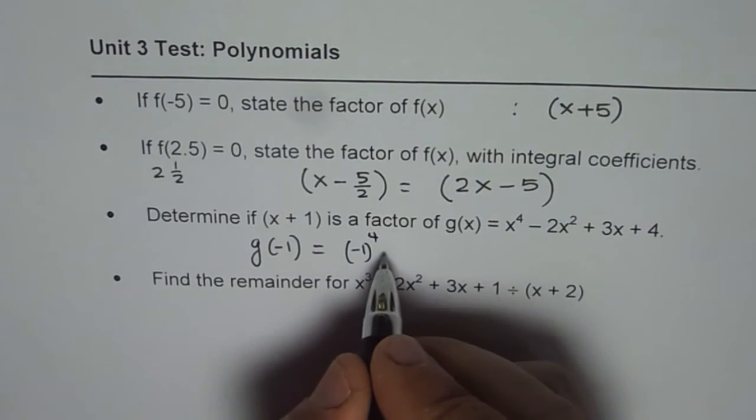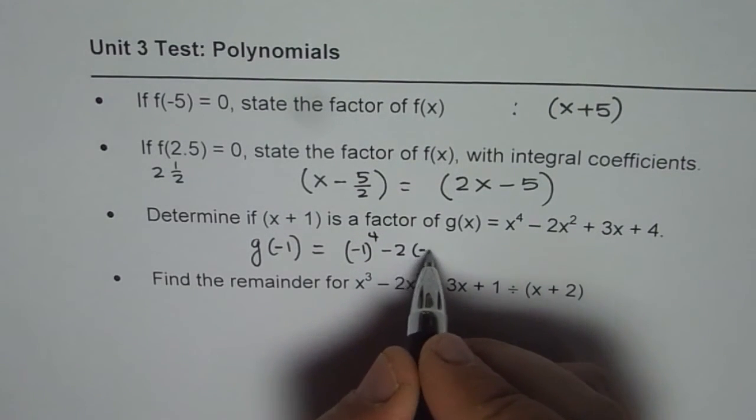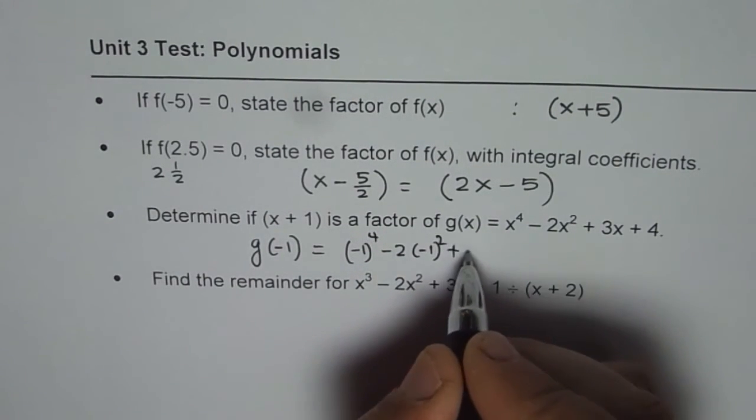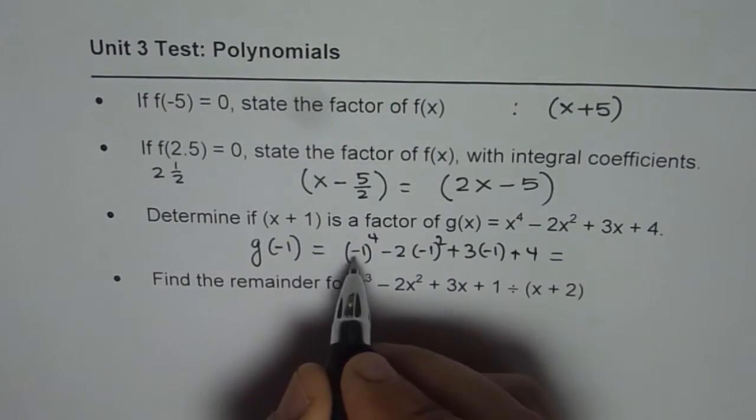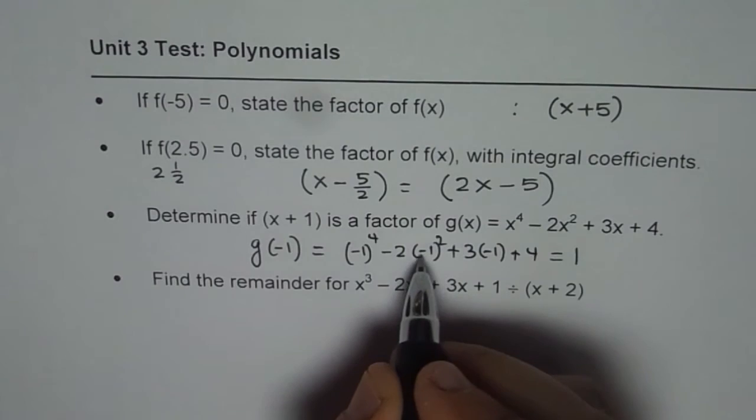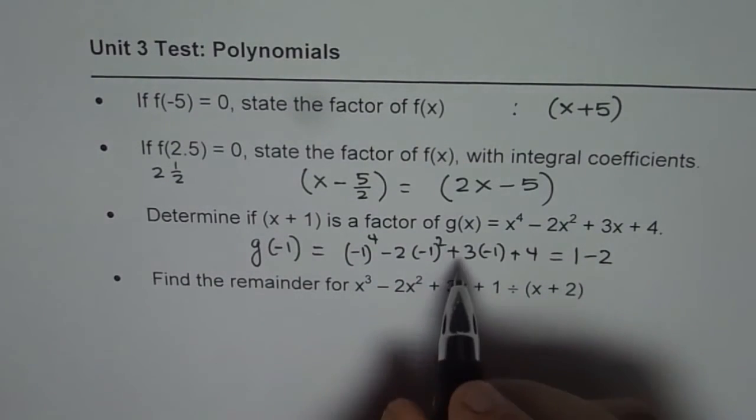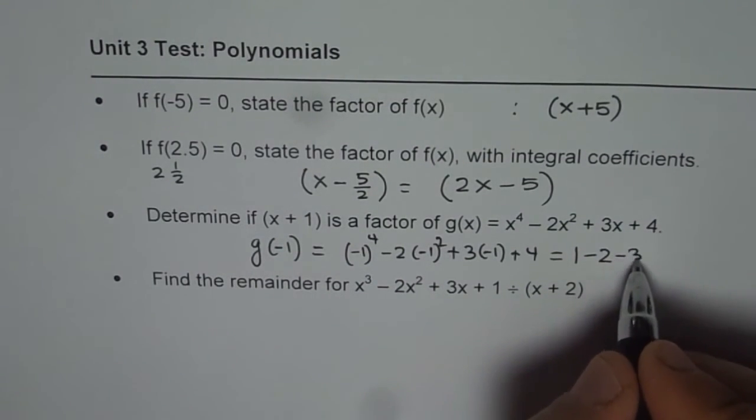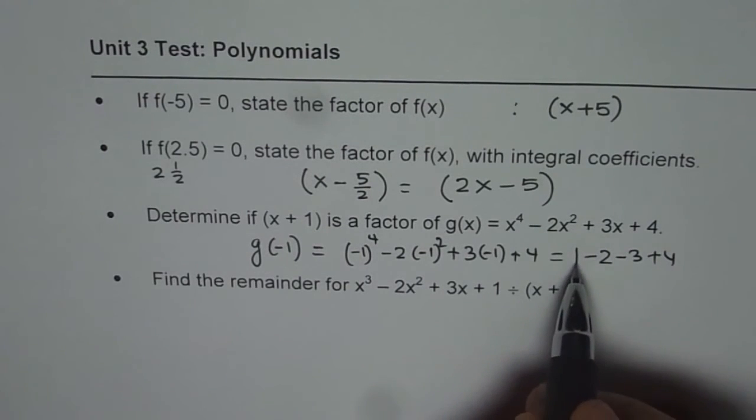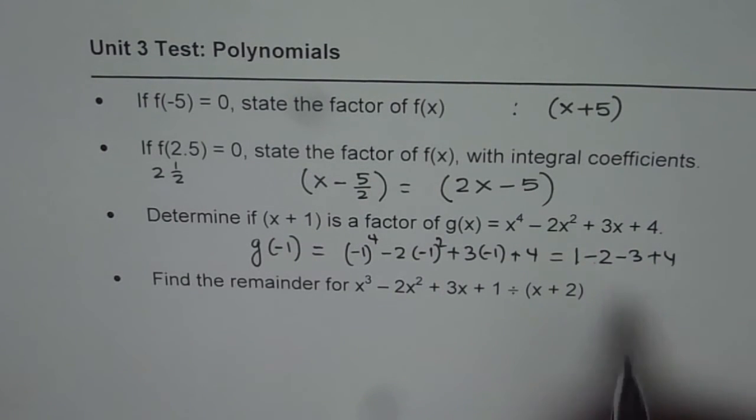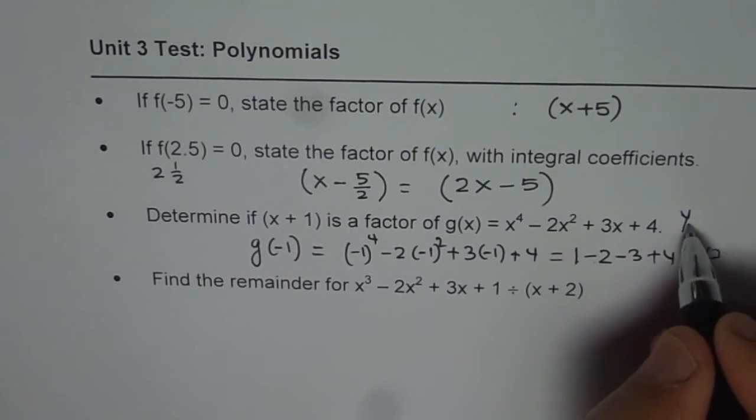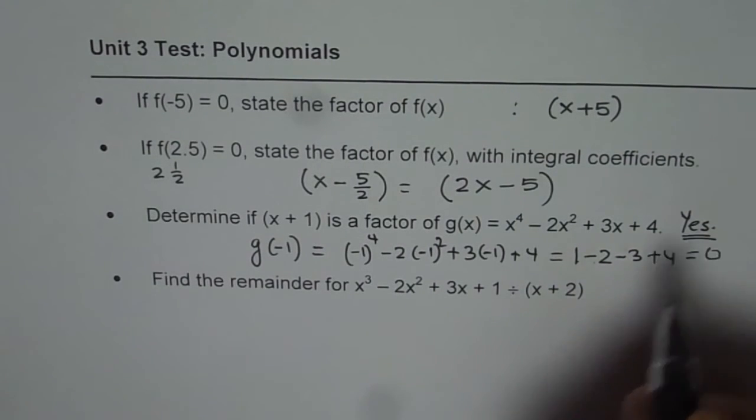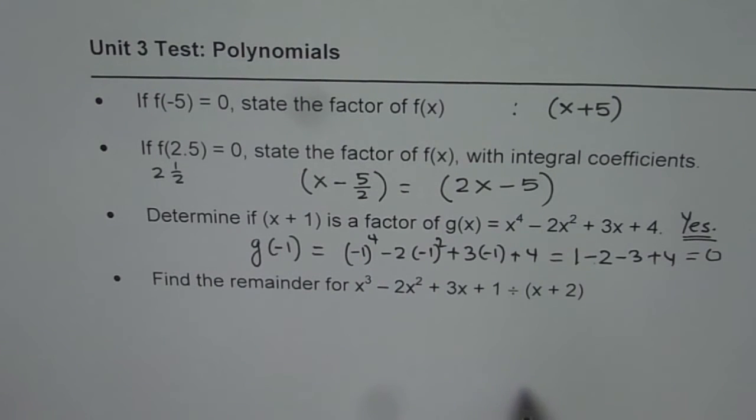So (-1)^4 - 2(-1)^2 + 3(-1) + 4. That gives us, this one is positive 1, this one is positive times negative 2, 3 is negative here, plus 4. So we have plus 5 and minus 5, which gives us 0. And therefore, the answer is yes, it is a factor, since g of minus 1 is indeed 0.